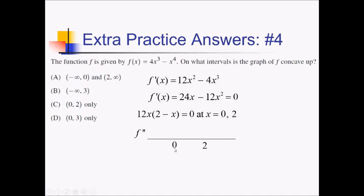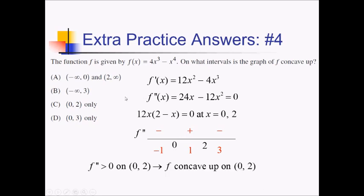Something to the left of 0, let's try negative 1, plugging into the factored version of f double prime. That gives us a negative times a positive, so that overall is a negative result. Between 0 and 2, we can use 1. That's a positive times a positive, so positive. And after 2, we can use 3. That's a positive times 2 minus 3, which is a negative, so negative overall. Since f double prime is positive between 0 and 2, f is concave up between 0 and 2. So that's going to be choice C.